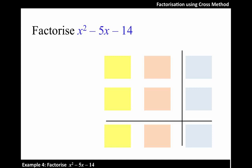Let's use the cross method to factorize the following. First of all, x squared can be expressed as a product of x and x as shown in the diagram.